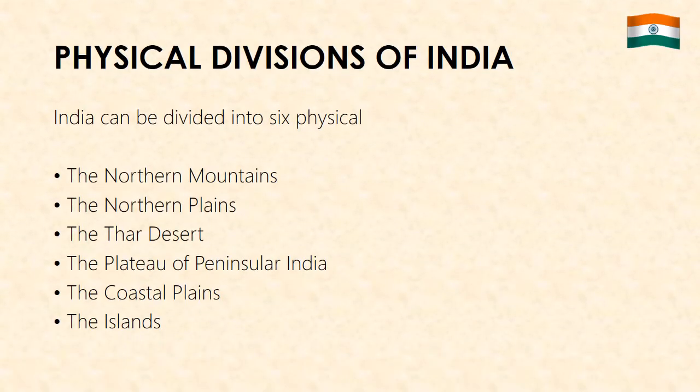Physical Divisions of India: India can be divided into six major physical regions — the Northern Mountains, Northern Plains, Thar Desert, the Plateau of Peninsular India, the Coastal Plains and the Islands.